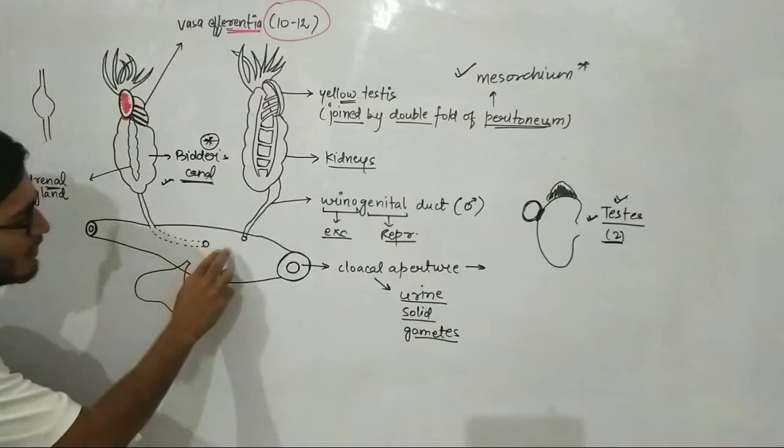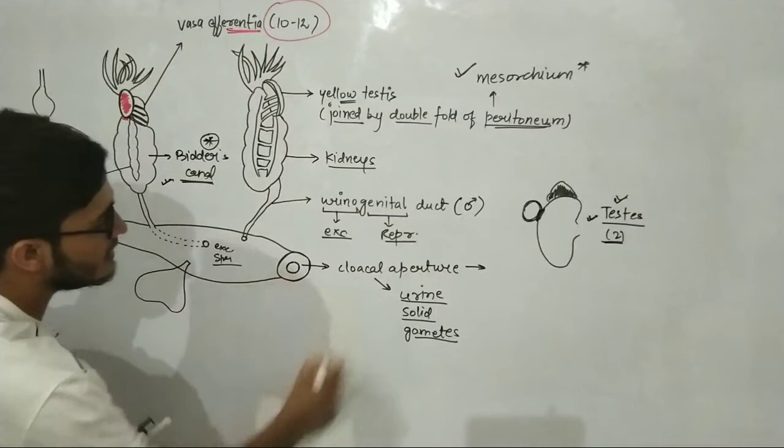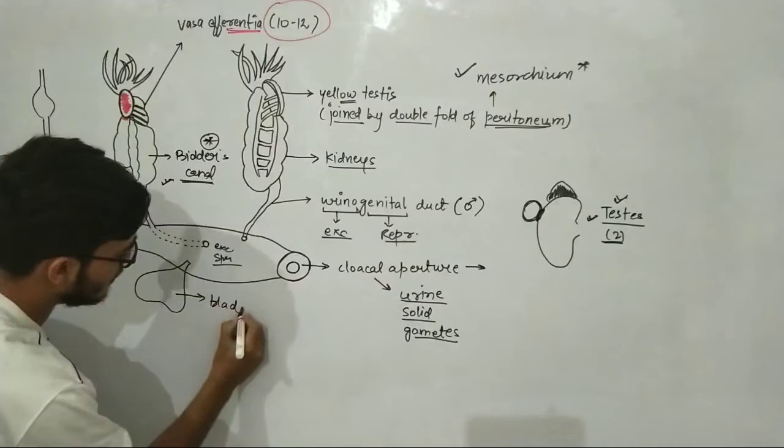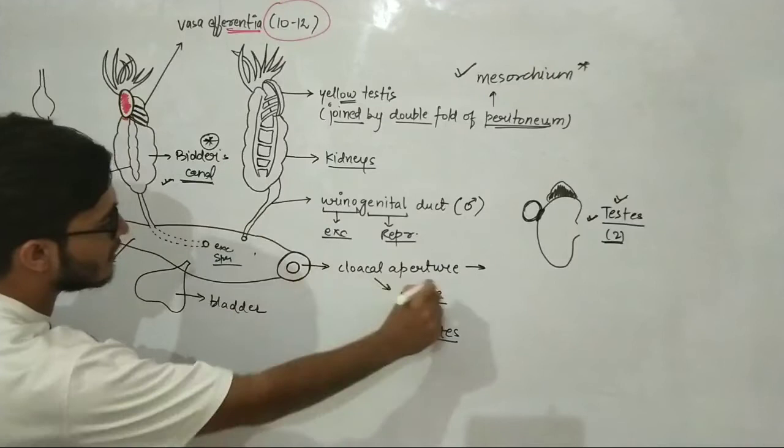So here your excretory product has also come here, which will exit from here. Here you have cloaca and then cloacal aperture.